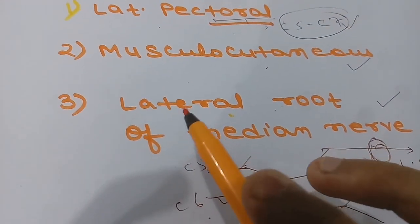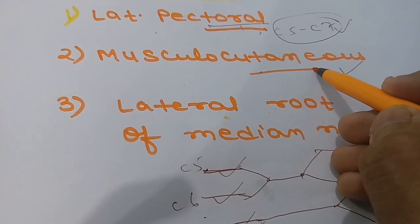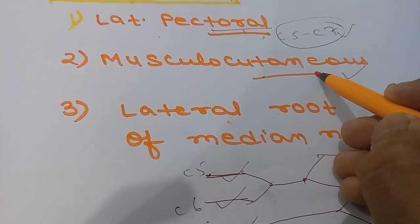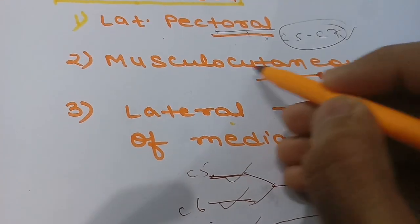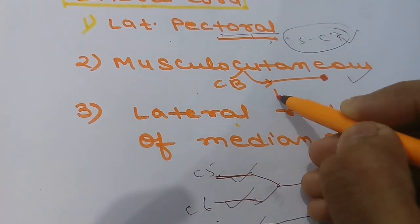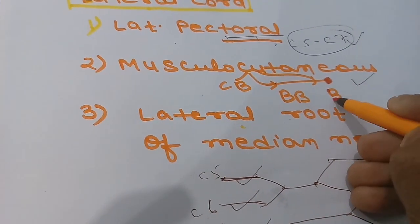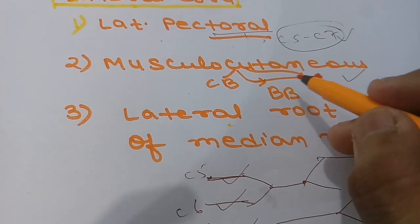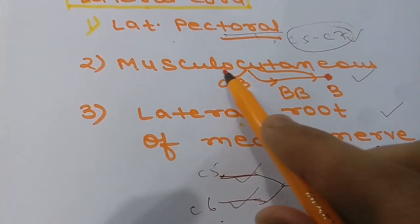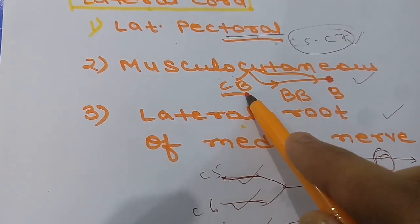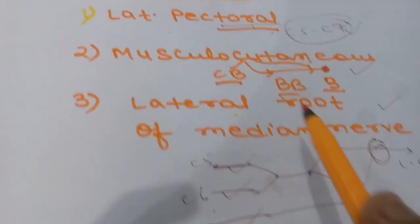The musculocutaneous nerve is the nerve of the front of the arm. It supplies the coracobrachialis, both heads of the biceps brachii, and the brachialis. These muscles — coracobrachialis, biceps brachii, and brachialis — are the muscles of the front of the arm. We will discuss them in more detail in our forearm videos.